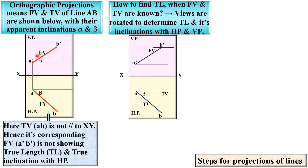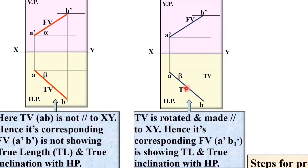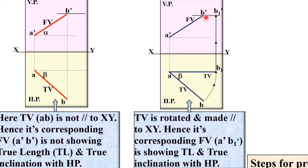Now let us see how to do it. First, the top view ab is rotated and made parallel to the XY line, giving ab1. Then it is projected up, giving a'b1'. This front view a'b1' is the true length and true inclination with HP. The inclination of a'b1' with the horizontal line is called the true inclination with the horizontal plane.